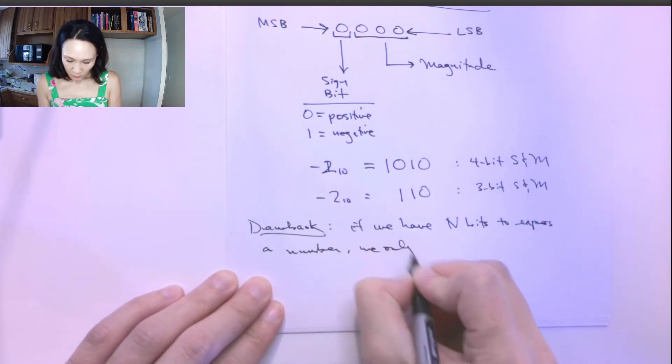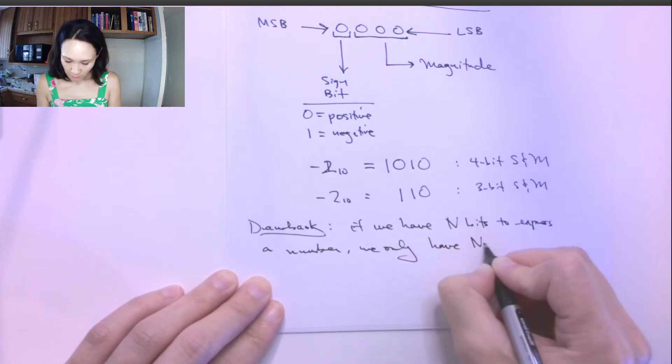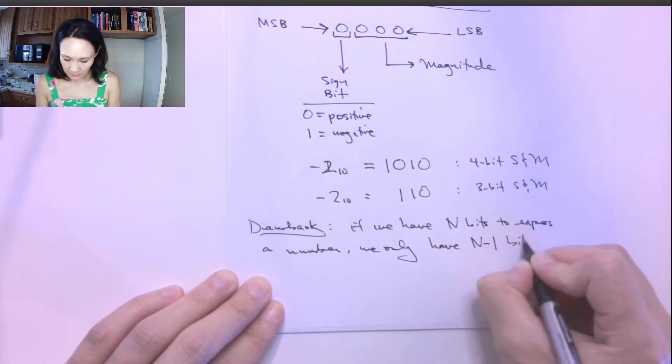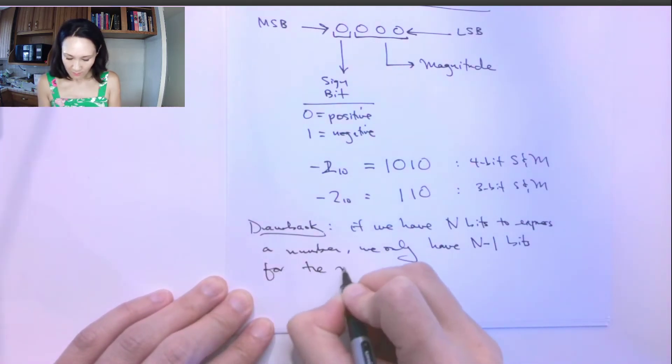We only have n minus 1 bits for the magnitude.